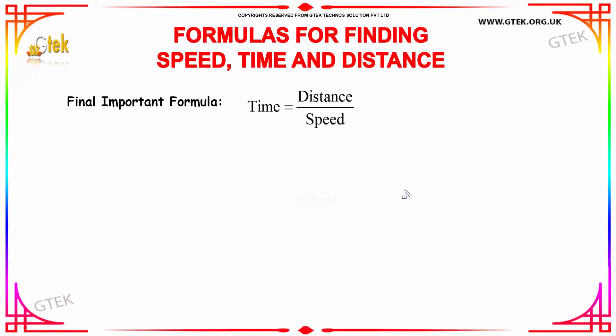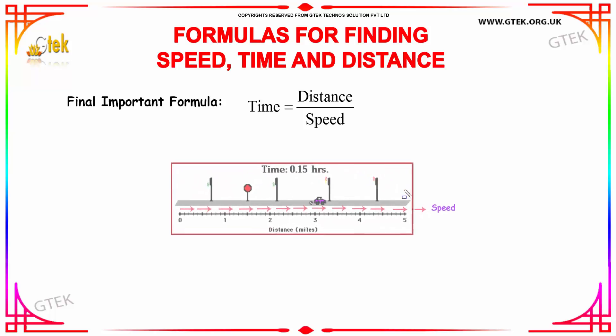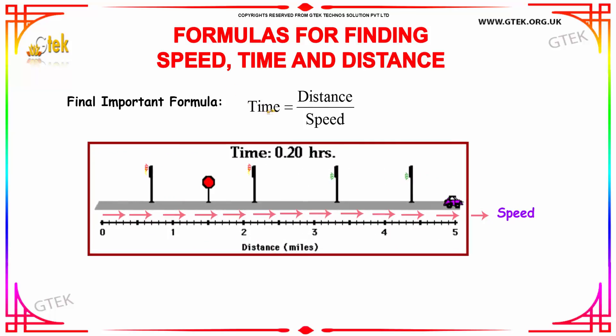Moving further, the final important formula is time equals distance divided by speed. Speed is the fastness of the object, and time is how much time and what is the distance. The formula is time equals distance by speed.